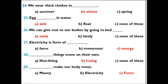Question 29: Dash makes our body move. Options: Money, electricity, force. The right option is force. Force makes our body move.